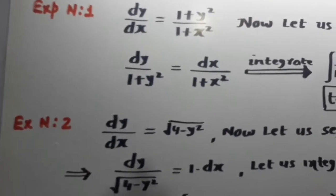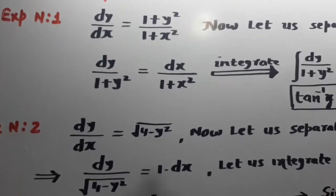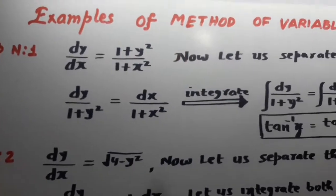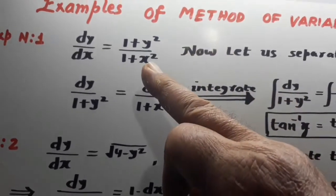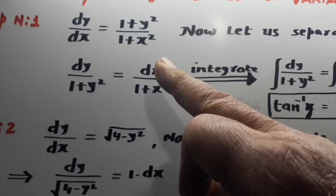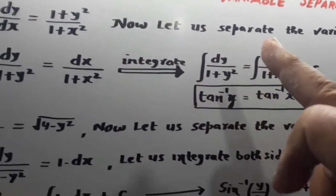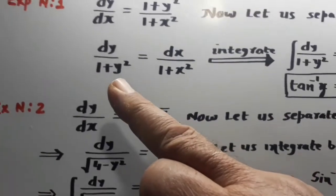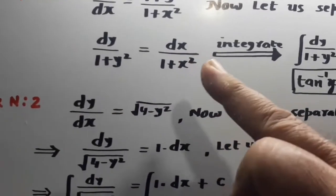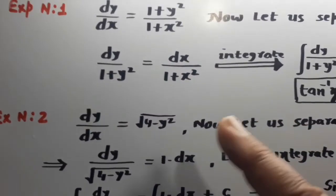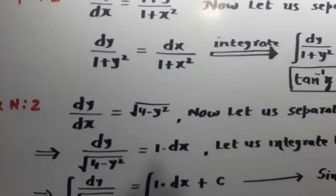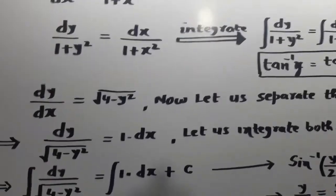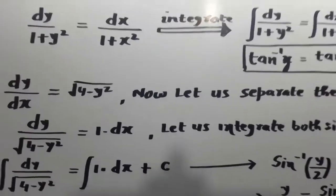Example number one. dy/dx is equal to (1+y²)/(1+x²). Now, let us separate the variables. dy comes on the left side and dx comes on the right side. Now, integrate. Ensure that dy and dx are always on the numerator.